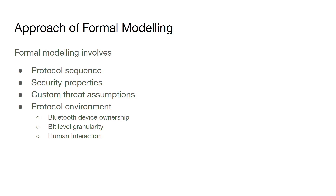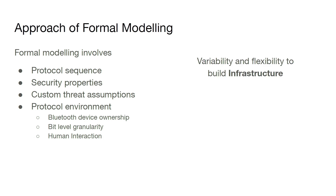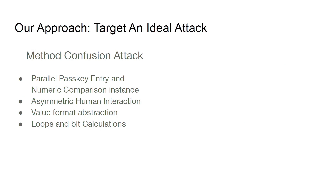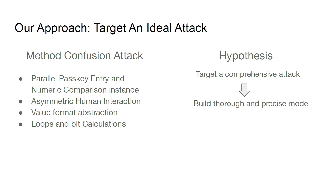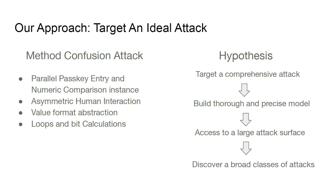When modeling a particular system or protocol, not only the protocol sequence and security properties are modeled, but the user can add custom threat assumptions and customize the protocol environment — for example, how device ownerships are structured and how human interaction works in Bluetooth. Our strategy was to target an ideal attack: the method confusion attack, a state-of-the-art attack involving parallel passkey entry and numeric comparison instances, asymmetric human interactions, loops, and bit calculations. Our hypothesis was that by targeting a comprehensive attack, we would build a thorough and precise model, giving us access to a large attack surface and enabling discovery of large classes of attacks.